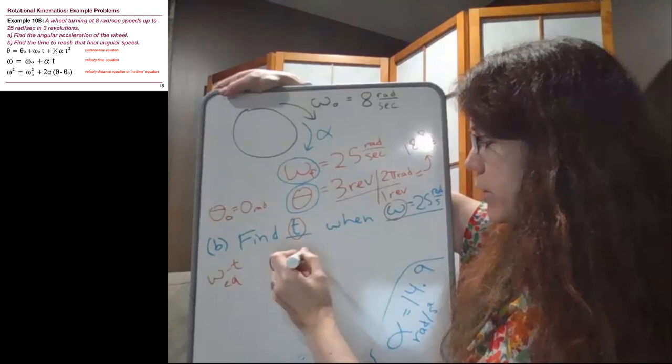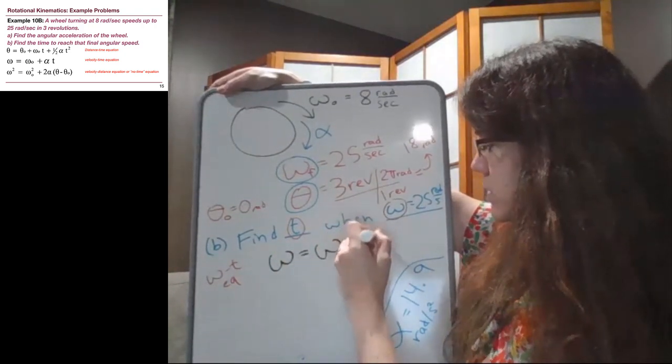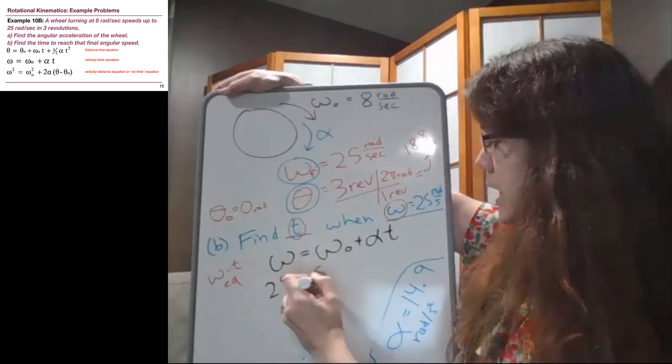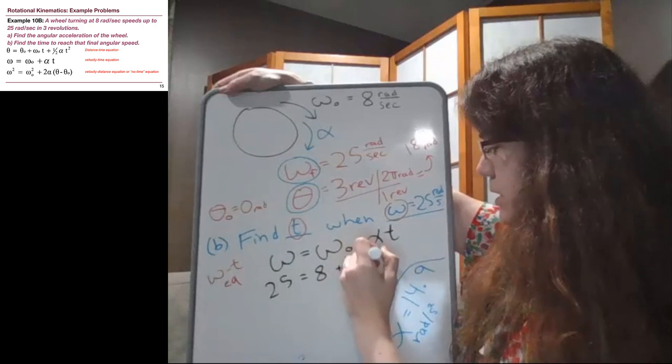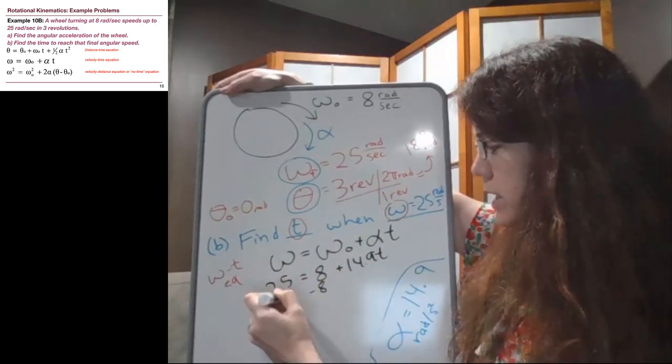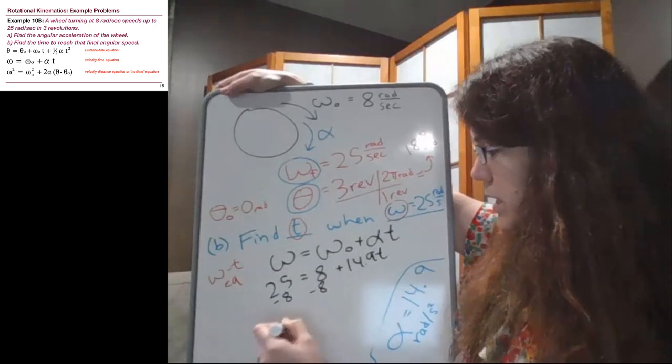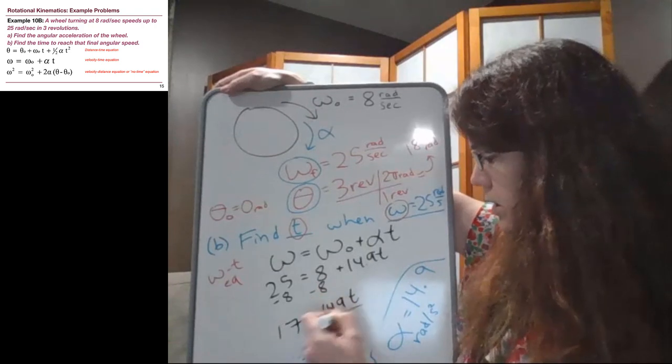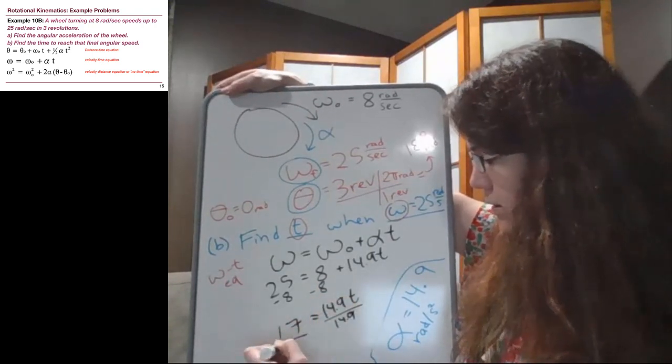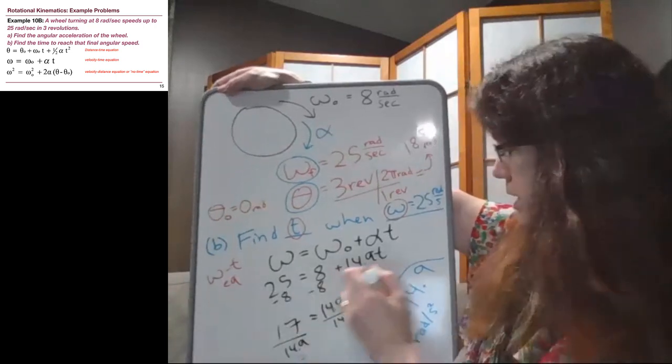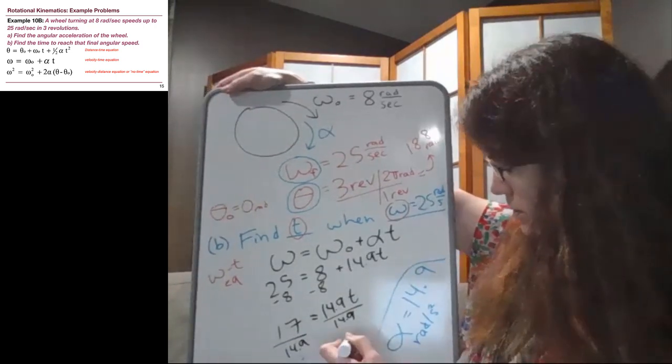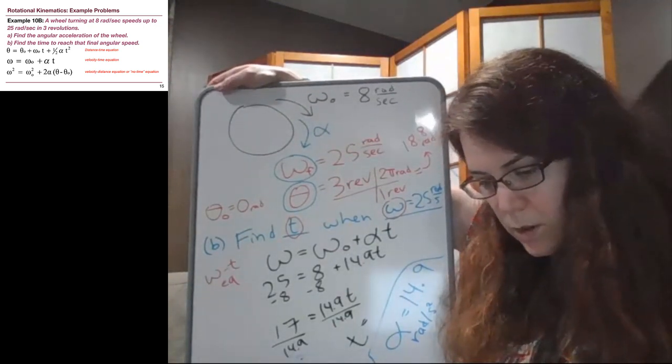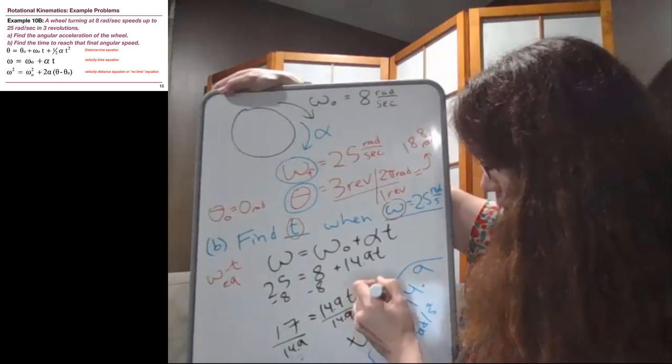The omega-T equation is ωfinal = ωinitial + αT. So we have 25 = 8 + 14.9T. Subtract 8 from both sides: 17 = 14.9T. Divide both sides by 14.9, and T equals 1.14 seconds.